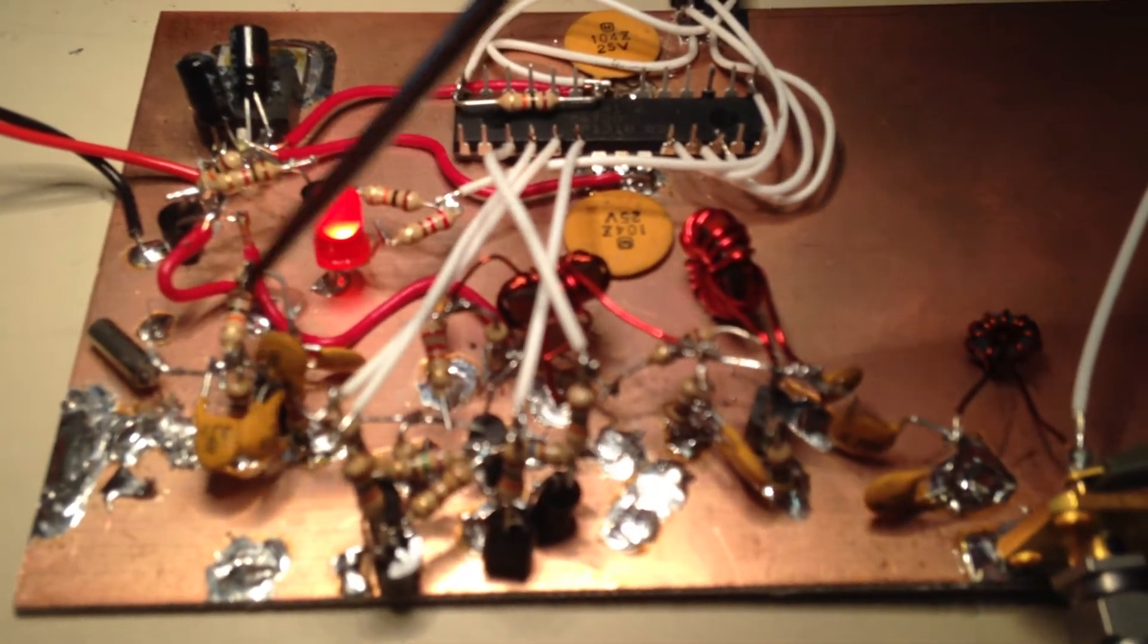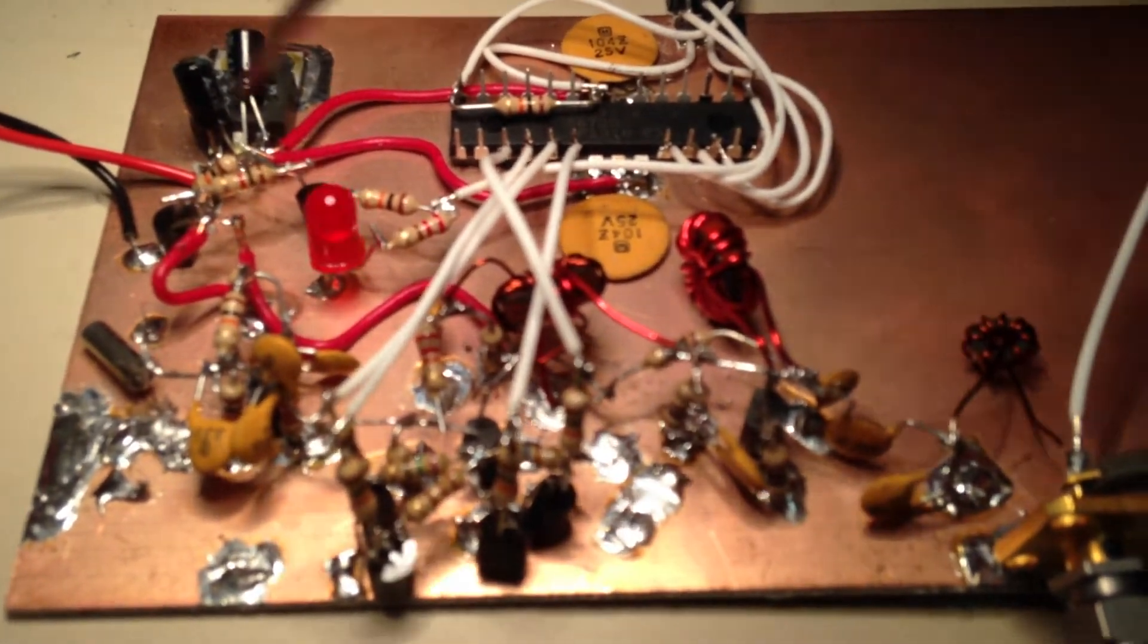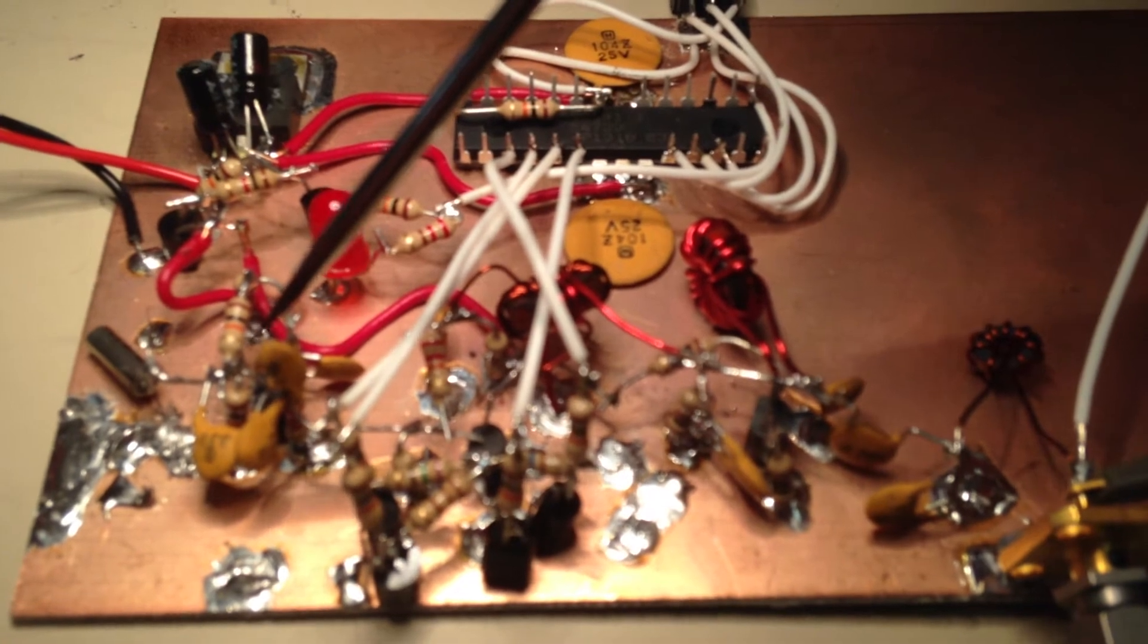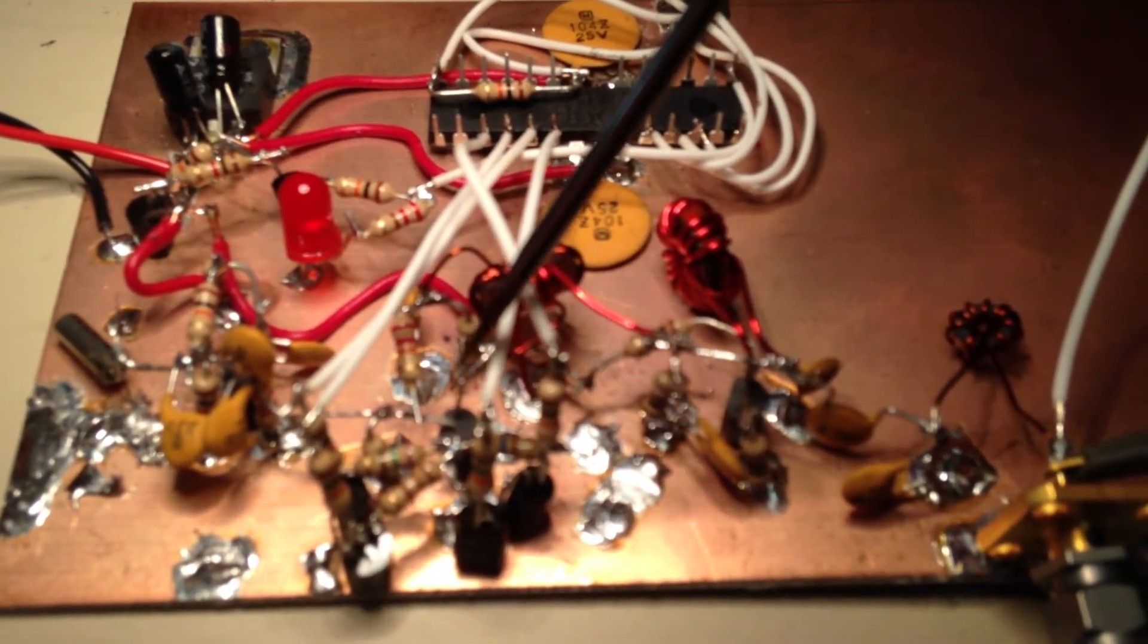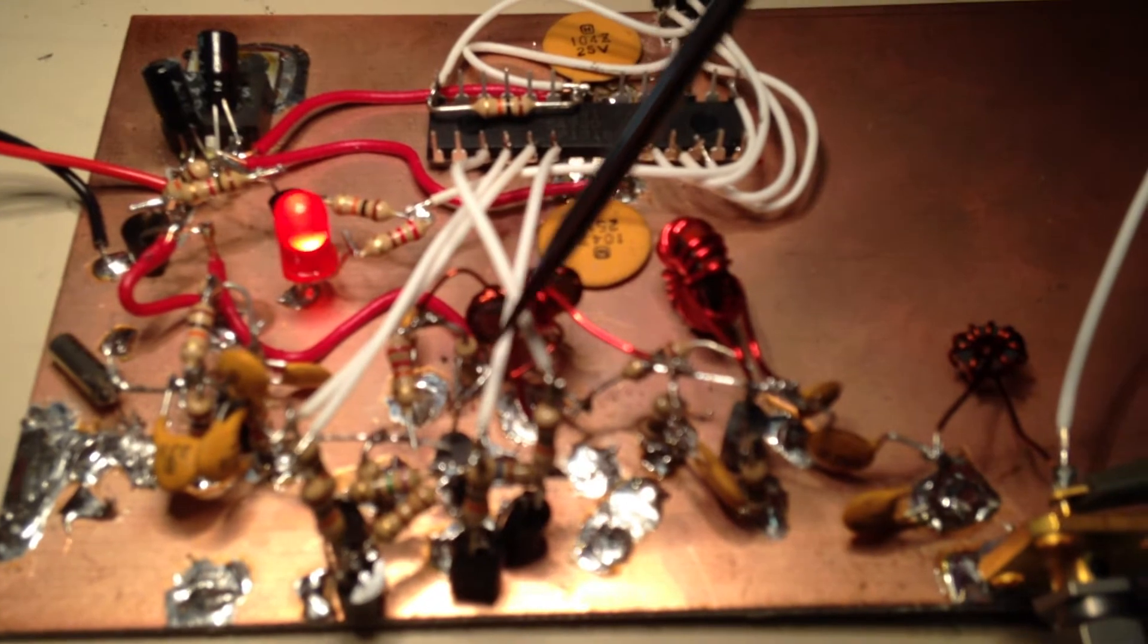We've got a Colpitz oscillator right here with a 7.2 MHz crystal that was easily available from Digi-Key. That feeds a common emitter buffer right here,